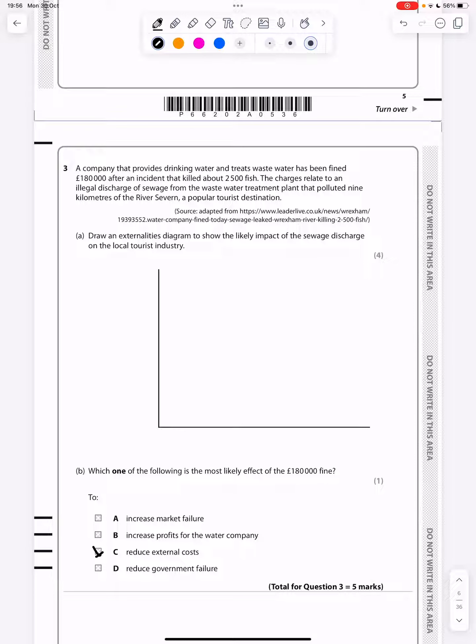A company that provides drinking water and treats wastewater has been fined 180,000 after an incident that killed about 2,500 fish. The charges relate to an illegal discharge of sewage from the wastewater treatment plant that polluted nine kilometers of the River Seven, a popular tourist destination. Draw an externality diagram to show the likely impact. That's a negative externality of production.